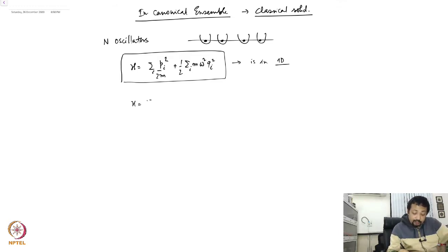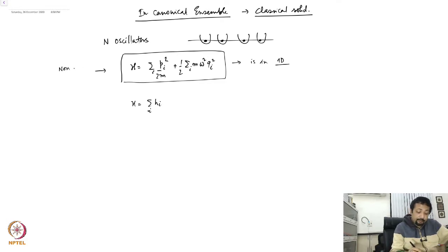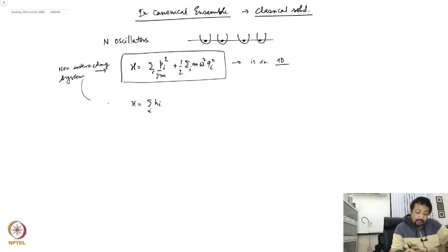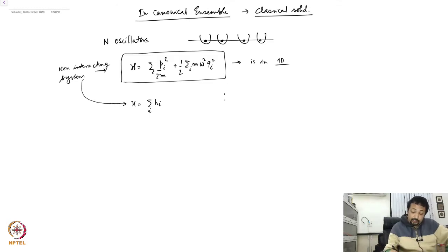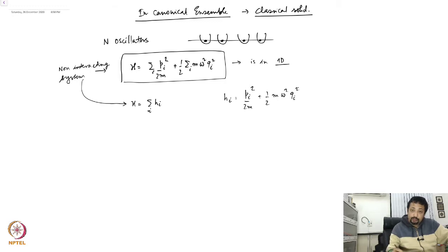The Hamiltonian I can write down as sum over i of h_i, so this is a non-interacting system. Consequently I can write down the Hamiltonian as a sum of single-particle Hamiltonians, where h_i is p_i squared over twice m plus half m omega squared q_i squared.